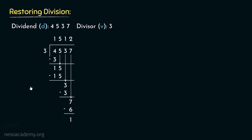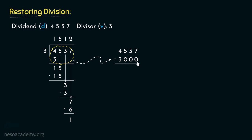Now observe the division more carefully. This is actually an acceptable shorthand method. Mathematically, from 4537 we are actually subtracting 3000. If you observe the quotient 1512, this is actually 1000 plus 500 plus 10 plus 2. So the first digit is not only 1 — it represents 1000. Multiplying 3 with 1000 gives 3000, and we are performing 4537 minus 3000, which gives us 1537. This 1537 is the remainder, and the partial remainder 15 is being yielded here.